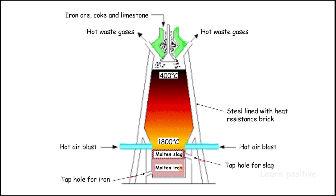The hot air reacts with the coke and heats it, firing the coke up to nearly 2000 degrees Celsius. At around 1800 degrees Celsius, the iron ore melts with the flux — limestone — and the impurities from the limestone and iron ore combine to form slag. The molten metal collects at the bottom of the furnace and the slag forms on top of the molten metal.